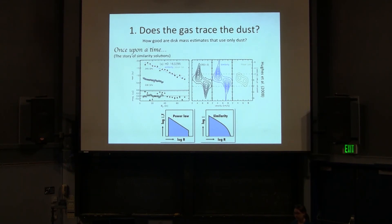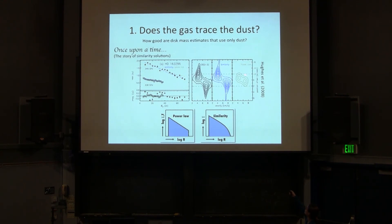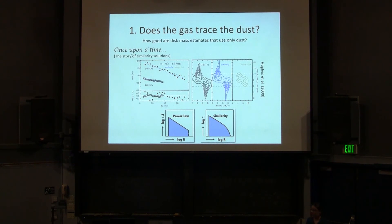Using similarity solutions, the radius where you start getting the exponential tail is identical for both gas and dust models. The characteristic radius here is maybe around one arc second — but because of the exponential tail, the disk actually exists much farther out, about three times as far as that radius. So the same similarity solution works for both the gas and the dust — you can reproduce the dust emission and the gas emission with the same model. This caused similarity solutions to catch on in disk modeling throughout the field for a few years.